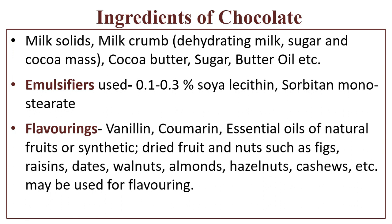Ingredients of chocolate: milk solids, milk crumb, dehydrated milk, sugar, and cocoa mass constitute milk crumb. Other ingredients include cocoa butter, sugar, butter oil, and emulsifiers used at 0.1 to 0.3% — such as soya lecithin and sorbitan monostearate. Flavorings include vanillin, coumarin, essential oils of natural fruits or synthetic. Dried fruits and nuts such as figs, raisins, dates, walnuts, almonds, hazelnuts, and cashews may also be used for flavoring.